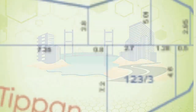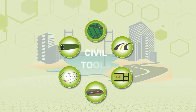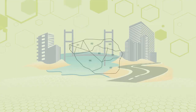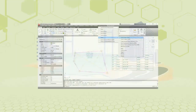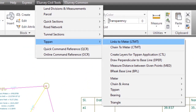Welcome to the introduction video of the TIPPAN module of eSurvey Civil Tools. TIPPAN is a primary survey document prepared in the field while doing a survey. It is a document that contains parcel-wise field measurements for each survey boundary. Most of the maps available are hand-drawn and not to scale. Using the TIPPAN module of eSurvey Civil Tools, you can create TIPPAN maps to scale in straightforward steps.